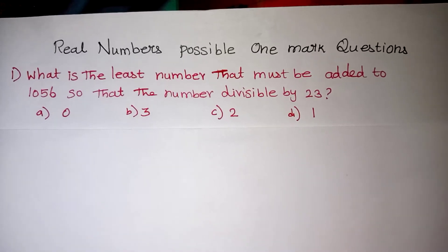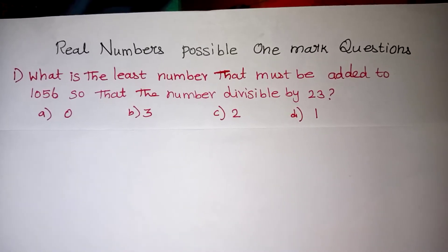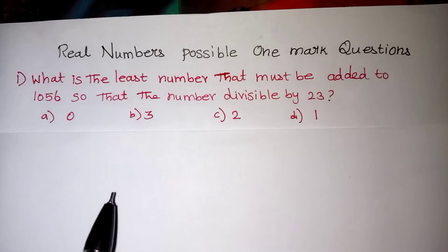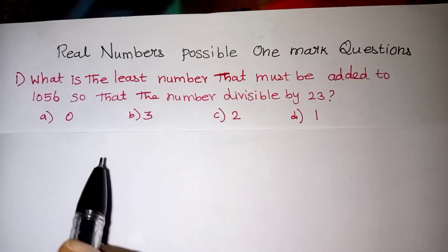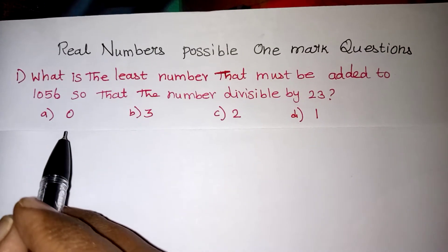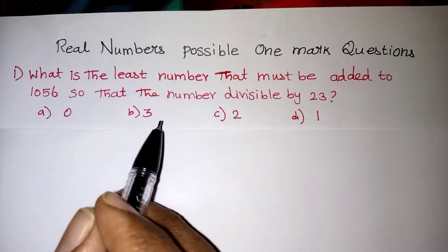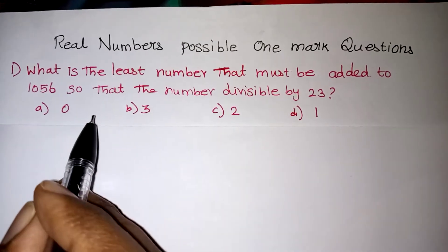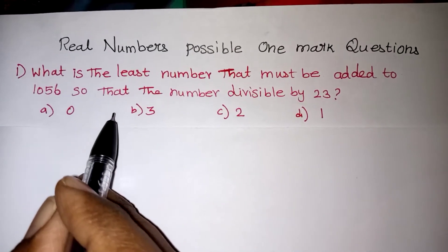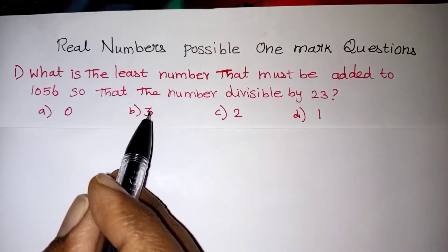Hi students, in this video we are going to learn some possible exam questions from chapter 1. So our first question: what is the least number that can be added to 1056 so that the number is divisible by 23?